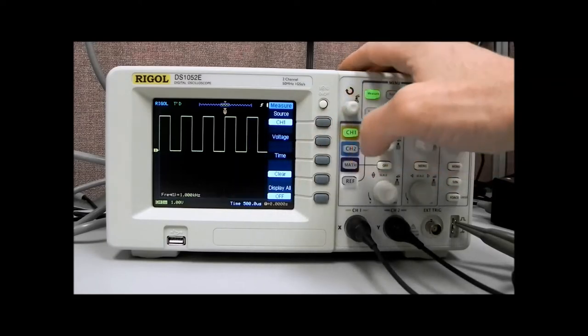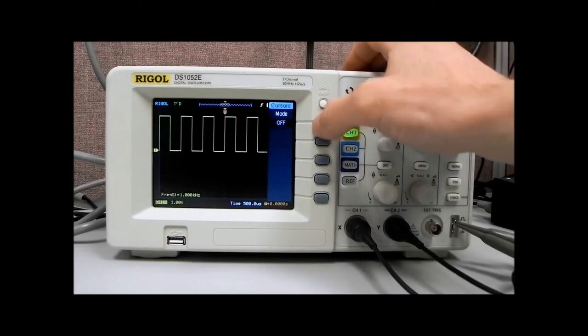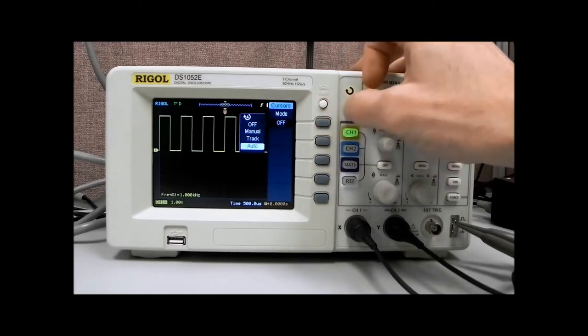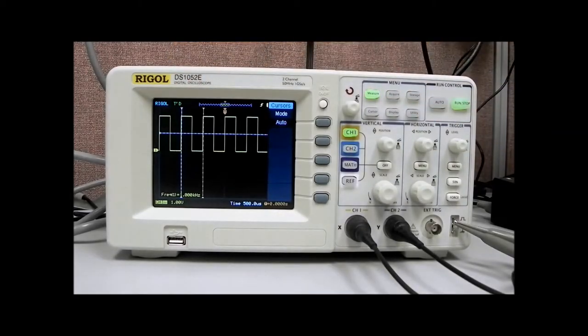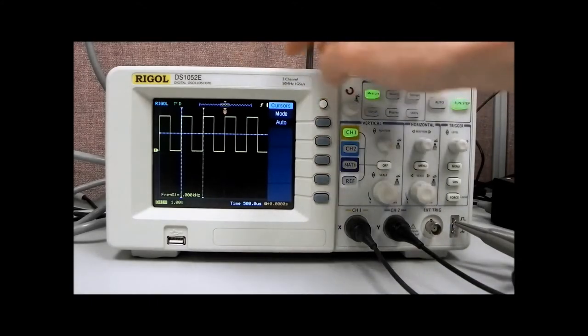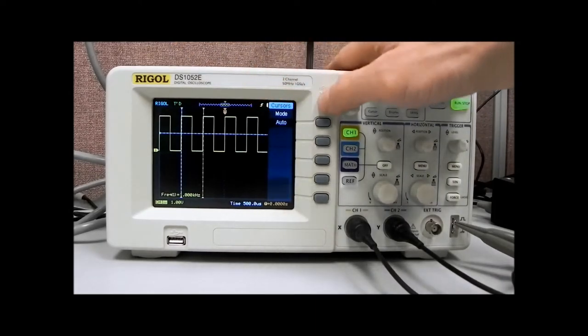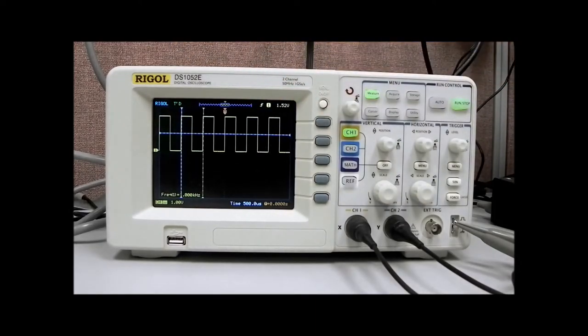And then I'm also going to go to cursor, and I'm going to hit auto, and that's going to put the cursors on the screen in the position that we're actually taking the measurement. So if you have questions about where the measurement is being taken, you can enable the cursors and hit that auto mode, and that's going to align the cursors on the screen, and you'll be able to tell exactly where on that waveform that frequency measurement is going to be made.